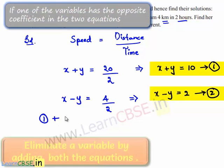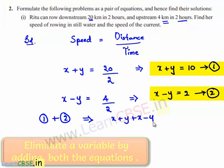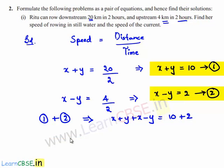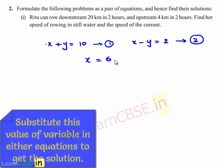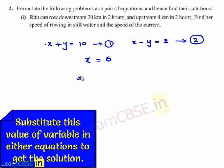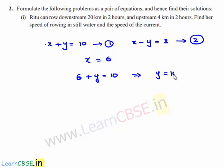Adding equations 1 and 2: (x + y) + (x - y) = 10 + 2. The y terms cancel, giving 2x = 12, so x = 6. Substituting x = 6 into equation 1: 6 + y = 10, giving y = 4.